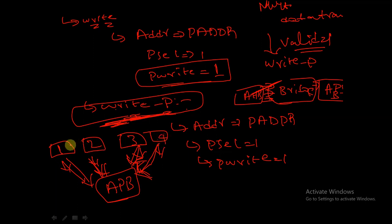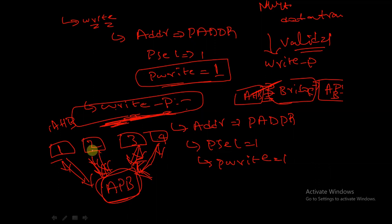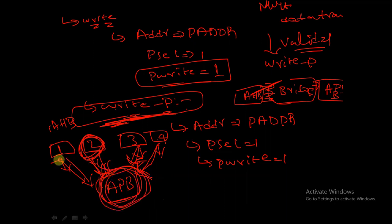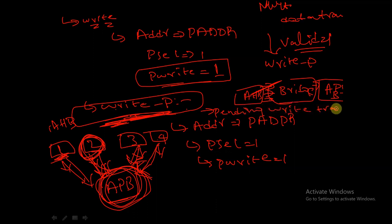Say this is the first packet, second packet, third, fourth. If the AHB sends the first packet and APB is dealing with the first packet, then the AHB sends the second packet. Since APB is dealing with the first packet, if the second packet arrives it should be inserted into a wait state so that APB completes its operation with the first packet, and after that it can deal with the second packet. So basically, write underscore P is called the pending write transfer state.